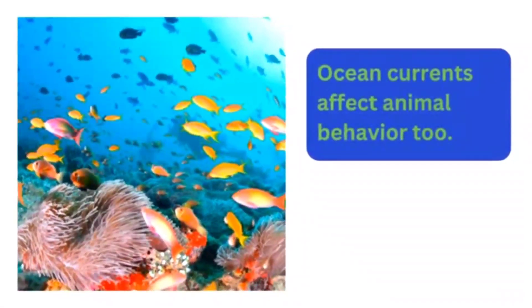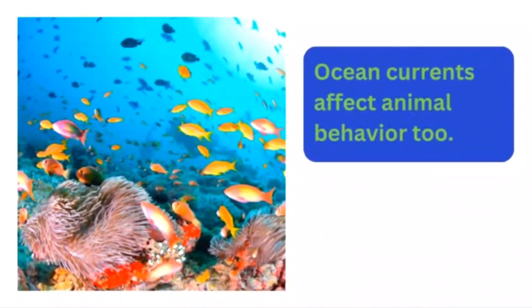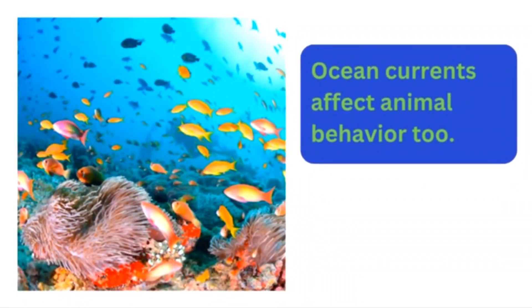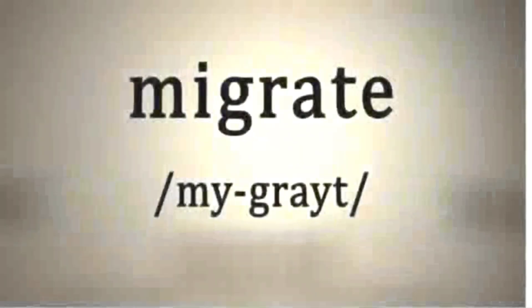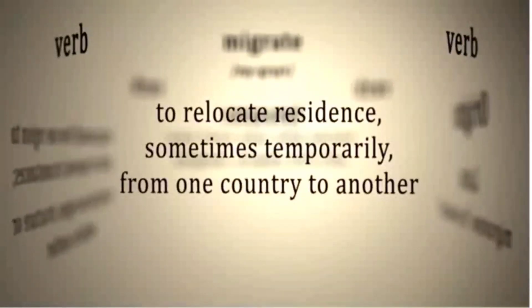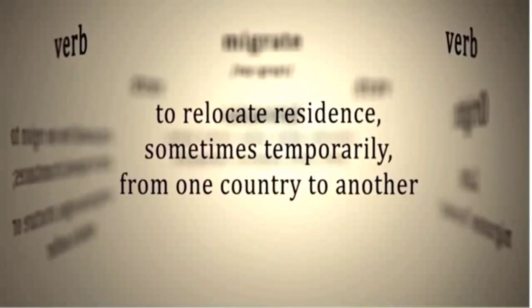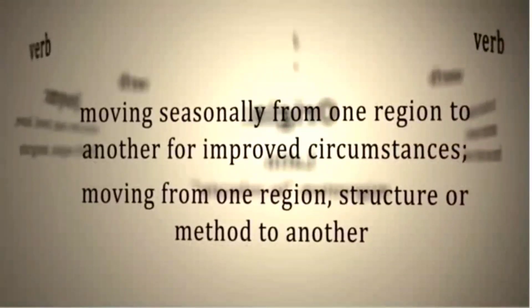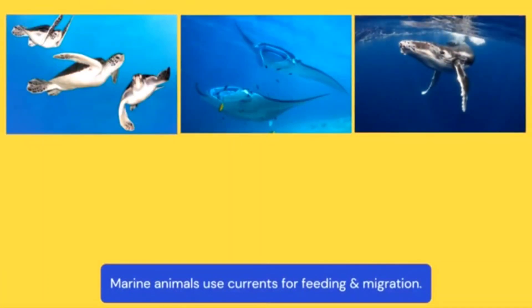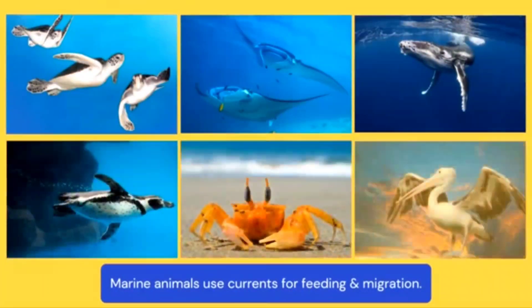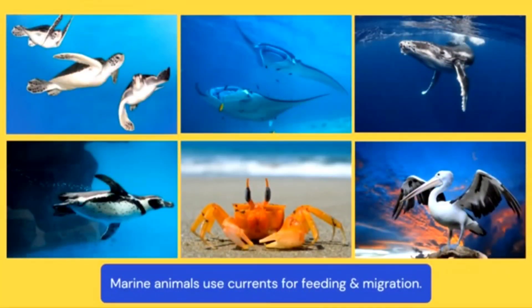Many animals use ocean currents for migration. Migration is when animals travel to a place, then back again. Lots of marine animals migrate for mating purposes, like sea turtles, stingrays, whales, penguins, crabs, and pelicans.